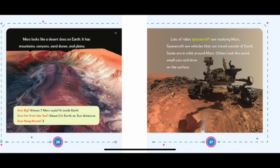How big? Almost seven Mars could fit inside Earth. How far from the Sun? About one and a half Earth-to-Sun distances. How many moons? Two.